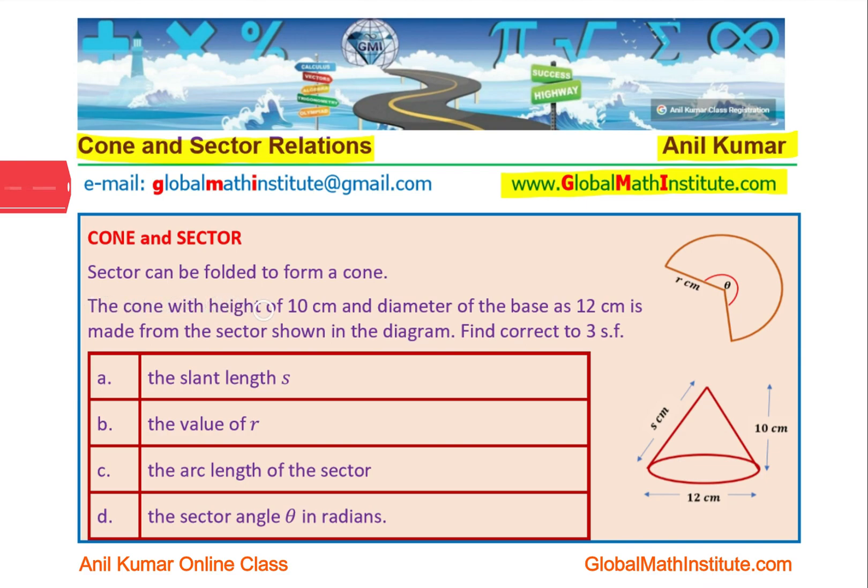The cone with height of 10 cm and diameter of the base as 12 cm is made from the sector shown in the diagram. Find correct to three significant figures: the slant length s, the value of r, the arc length of the sector, and the sector angle theta in radians. I hope you understand the question.